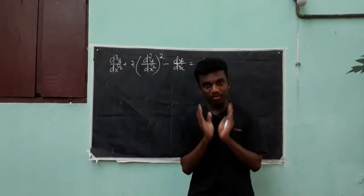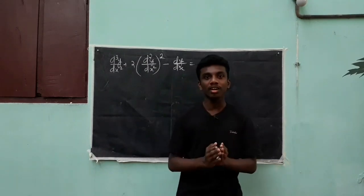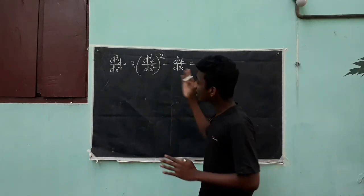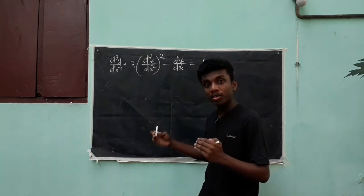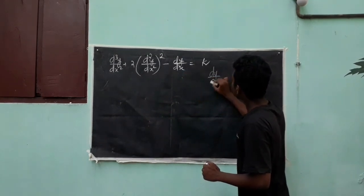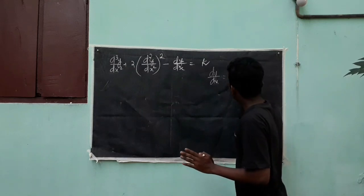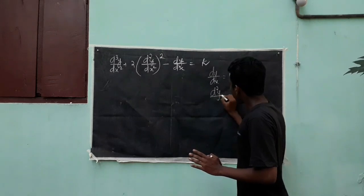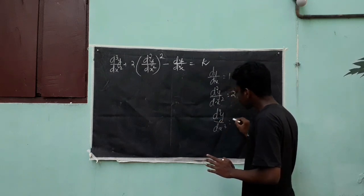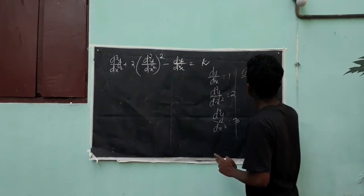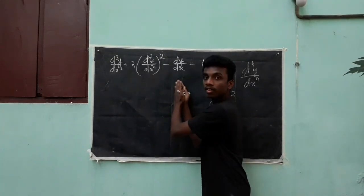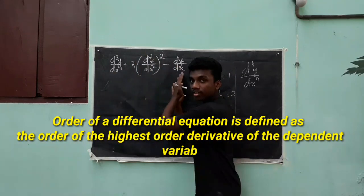Now let's talk about order and degree. If you have a differential equation, it has an order and a degree. The order is determined by the highest derivative term present. dy/dx is a first order derivative. d²y/dx² is a second order derivative. d³y/dx³ is a third order derivative. In general, dⁿy/dxⁿ is an nth order derivative.